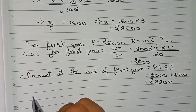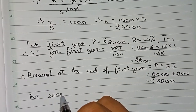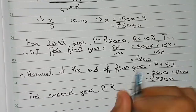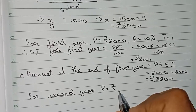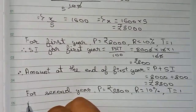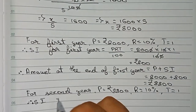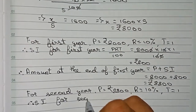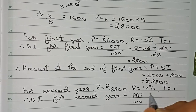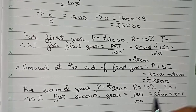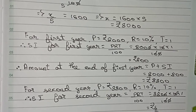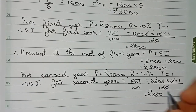For the second year: the amount at the end of the first year, that is 8,800, becomes the principal for the second year. Rate remains 10% and time is 1 year. The SI for the second year using the formula PRT/100 is 8,800 into 10 into 1 divided by 100. Cutting the zeros, it remains rupees 880.